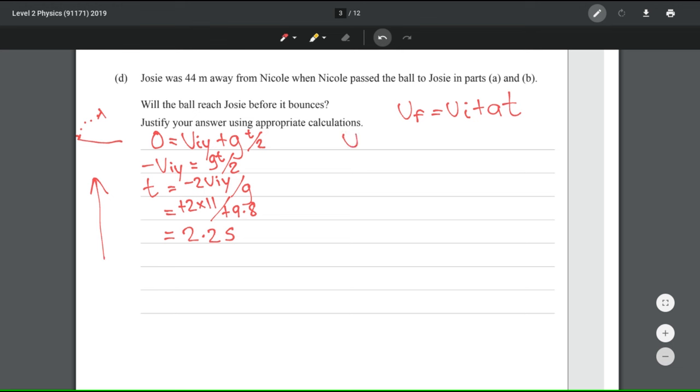The next step is to find the initial horizontal velocity. And we can do that similarly to how we found the vertical, by going 22, and instead of sine, it's cosine, times our angle, which is 30 degrees. When we do that, that gives us 19.05, which I'm again going to round to two significant figures. So that's 19 meters per second.